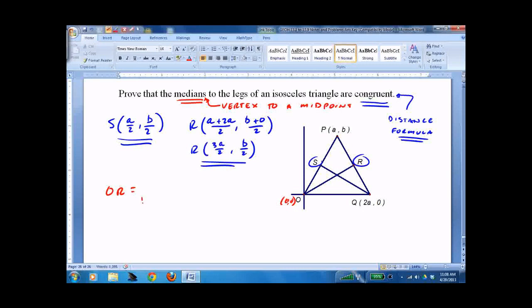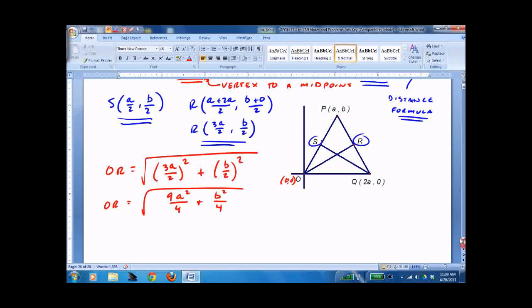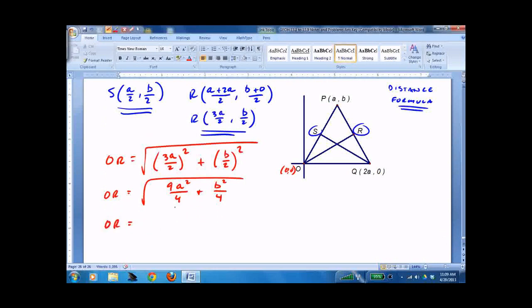We should not have the top on there because that does not mean distance. So we do 3a over 2 squared. I should put minus 0, but I'm not going to. b over 2 squared. A little bit of algebra because we're going to have to make this look like something a little bit later. 9a squared over 4 plus b squared over 4. And I'm going to pull the 4 out of the bottom. Just for good practice. That's OR. That is not that bad.